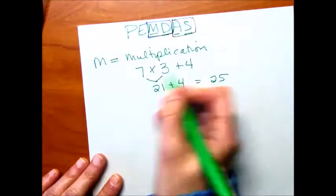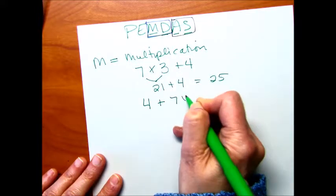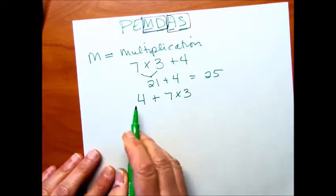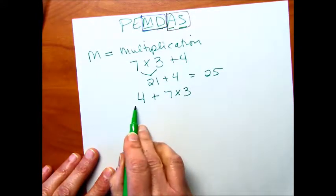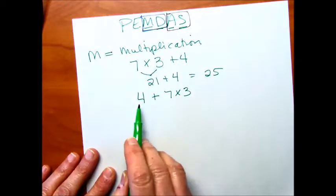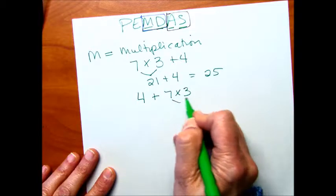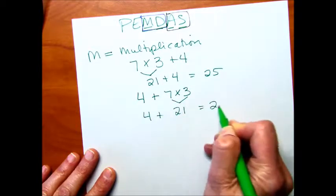Say if it was written backwards. Say if it was 4 plus 7 times 3. This is where it gets tricky, like that first problem we did. Don't just go left to right. Multiplication comes before addition. So we have to do this part first. That's 21. And then we add the 4. We get our answer.